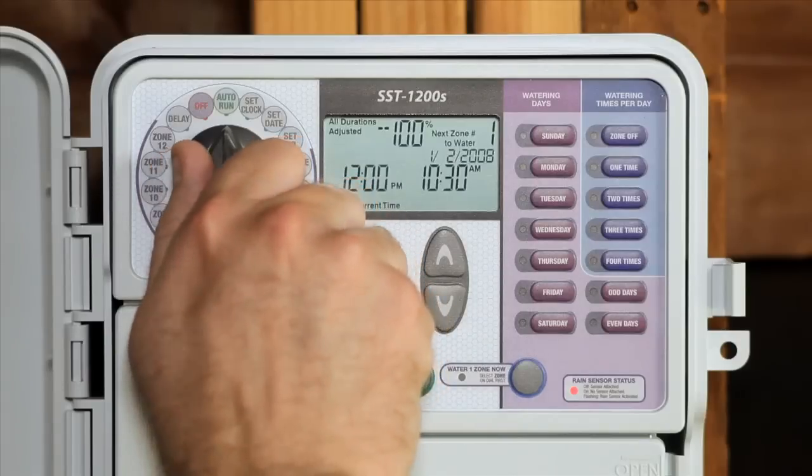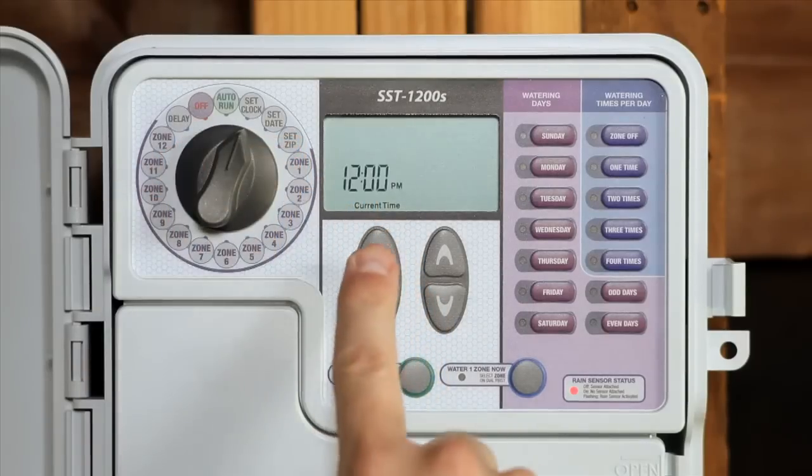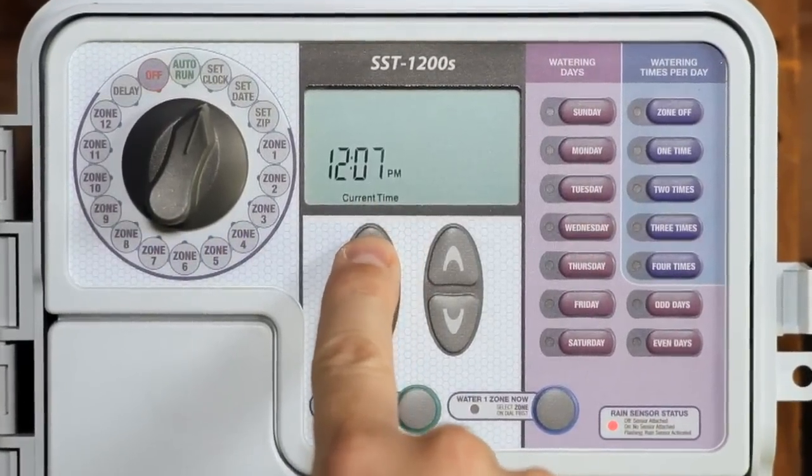Let's get started programming your controller. Here's all you need to do. First, turn the dial so it points to the set clock marking. Push the left up down arrow keys until the current AM or PM time appears.